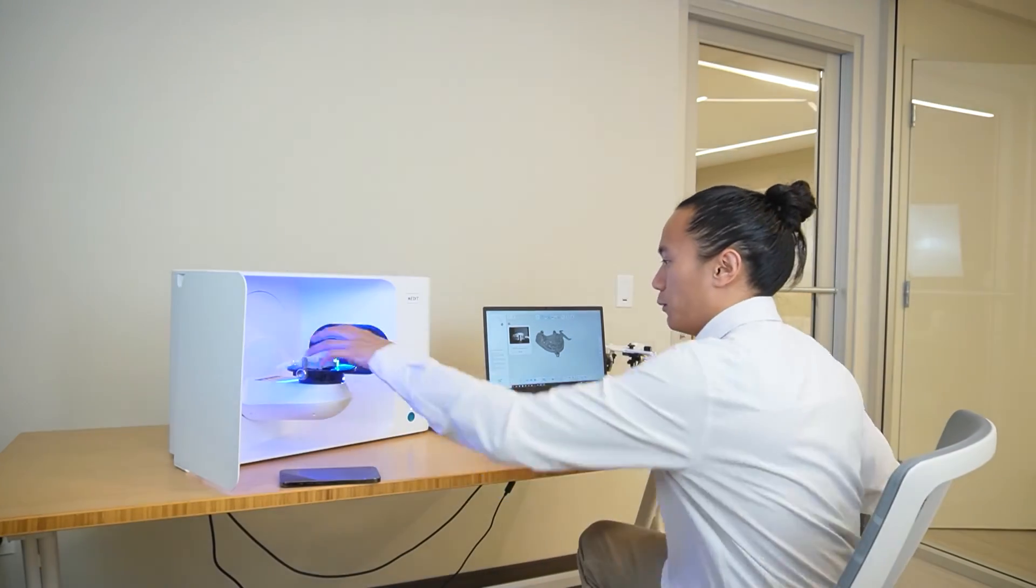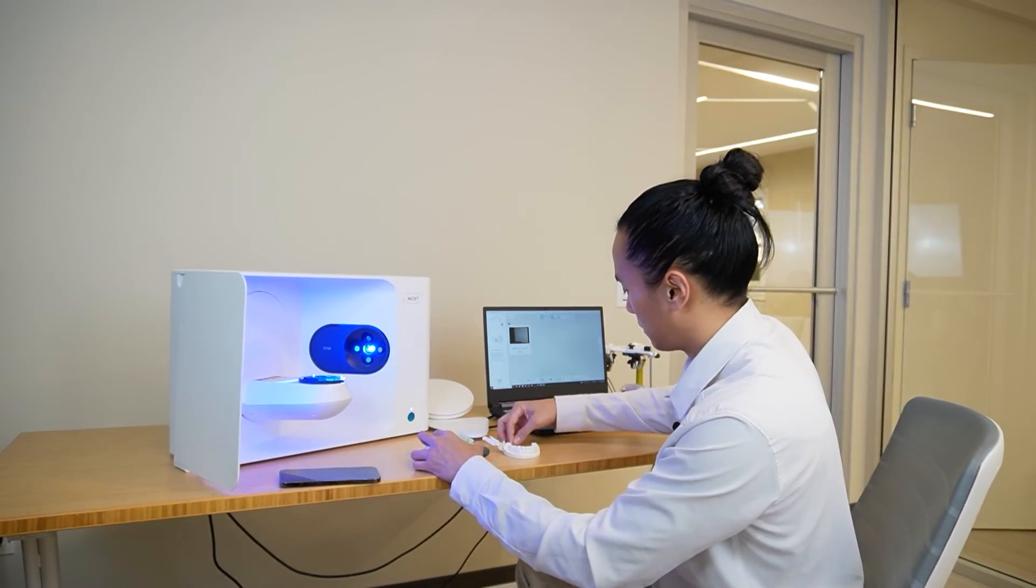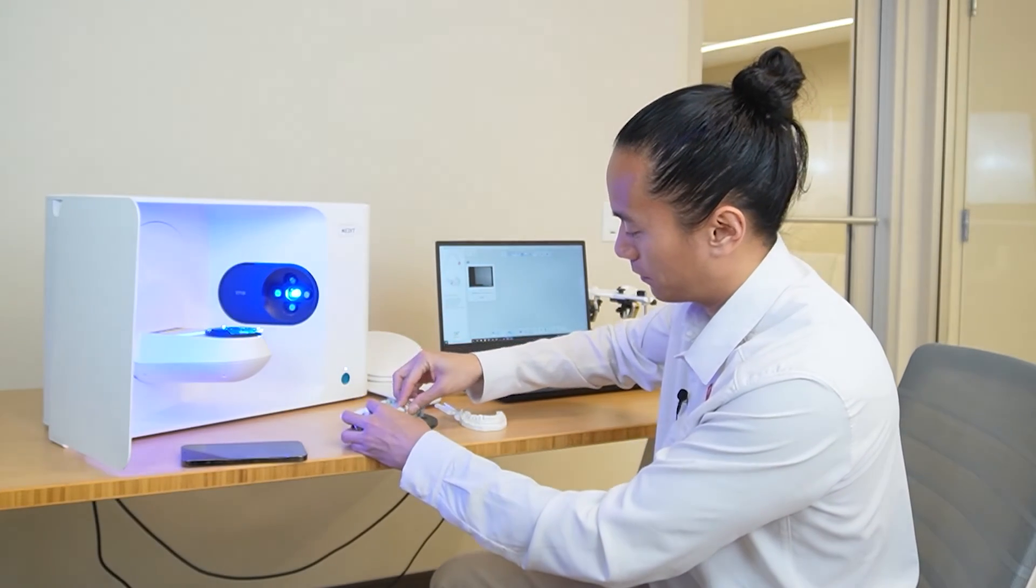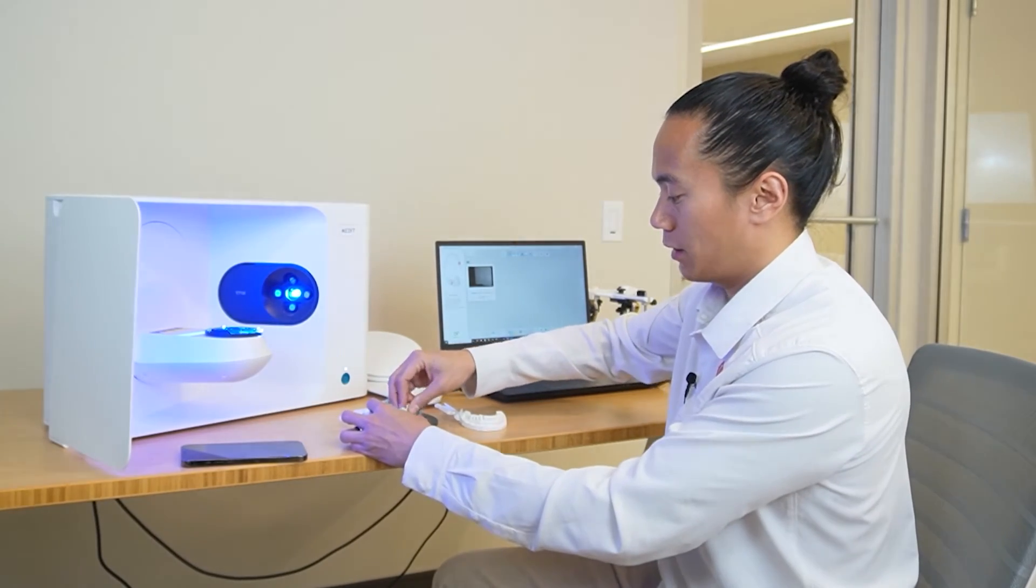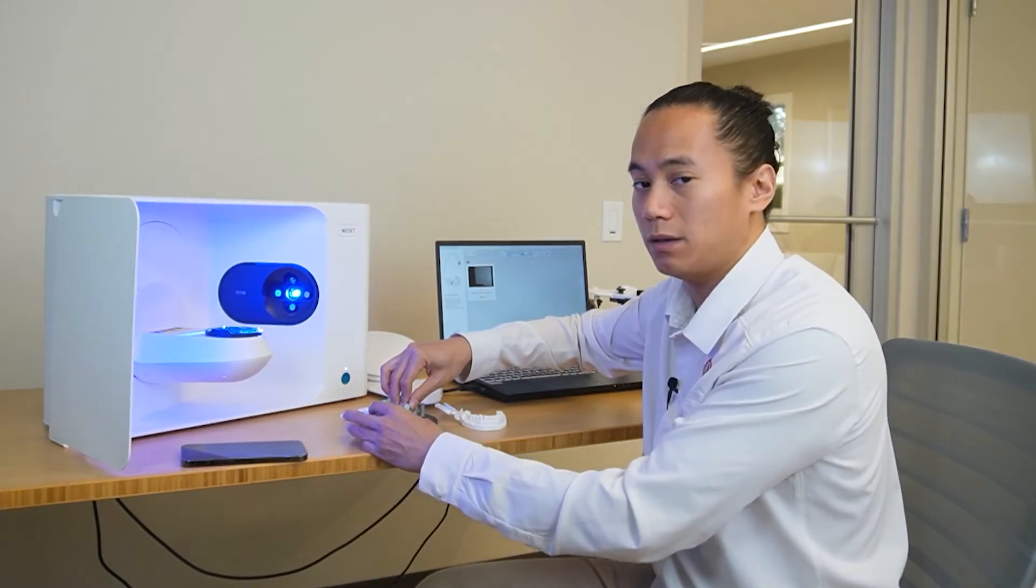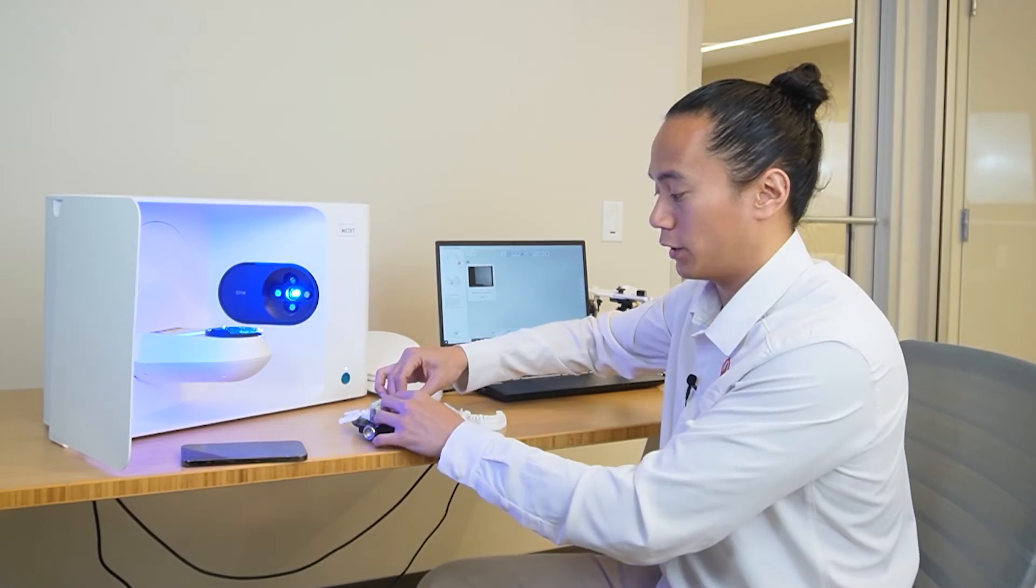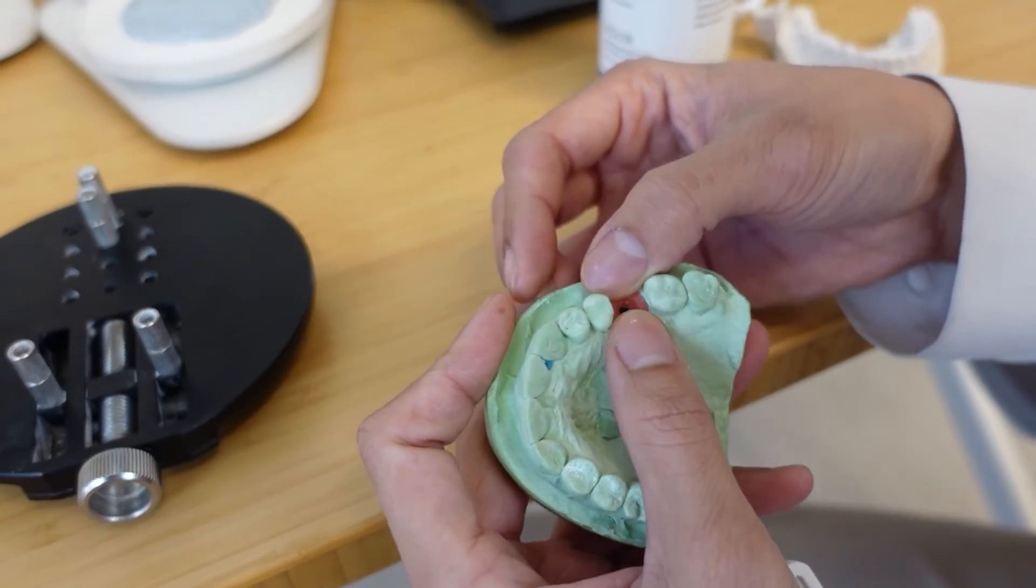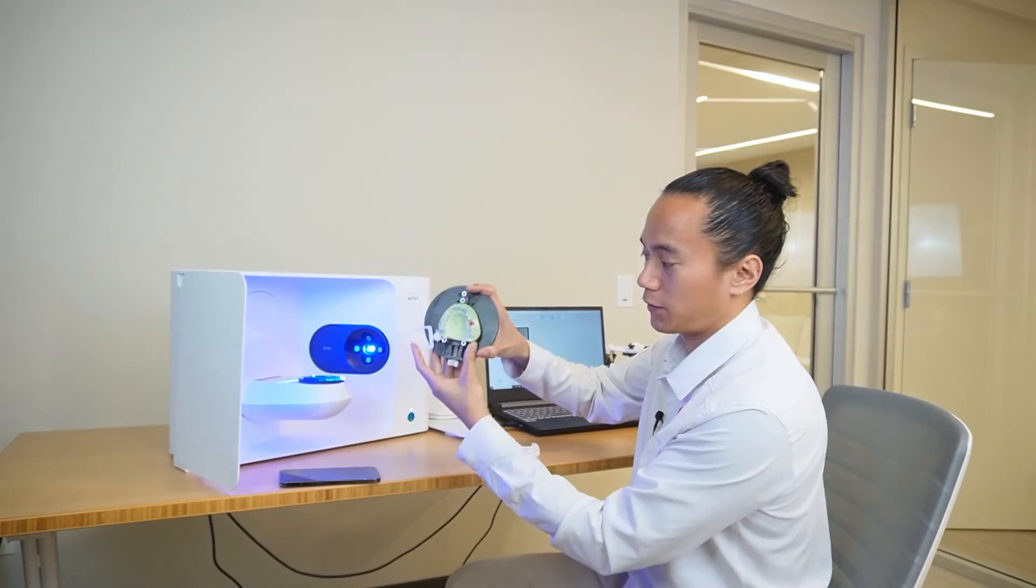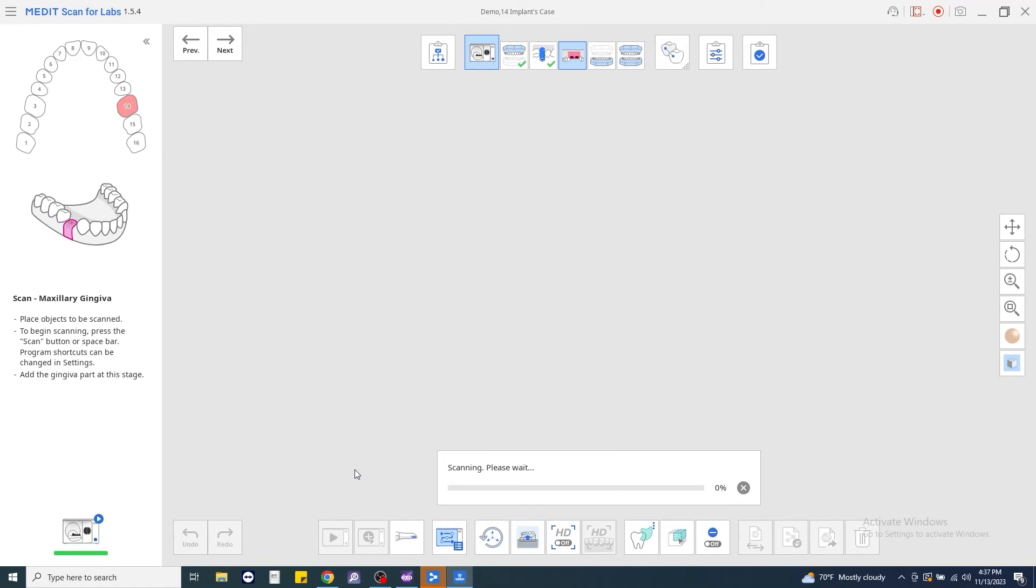Once we're done scanning, we'll go ahead and remove our stage. When we scan in the gingival, we want to make sure we remove the scan body and place the gingival mask back on. Now, you'll want to confirm that your original scan of just the model base did not have both the scan body or the gingival on it, or you're going to lose that data when it converts and aligns everything together. So, our gingiva is firmly seated in our model. We'll go ahead and place this back into our scanner and proceed with scanning.